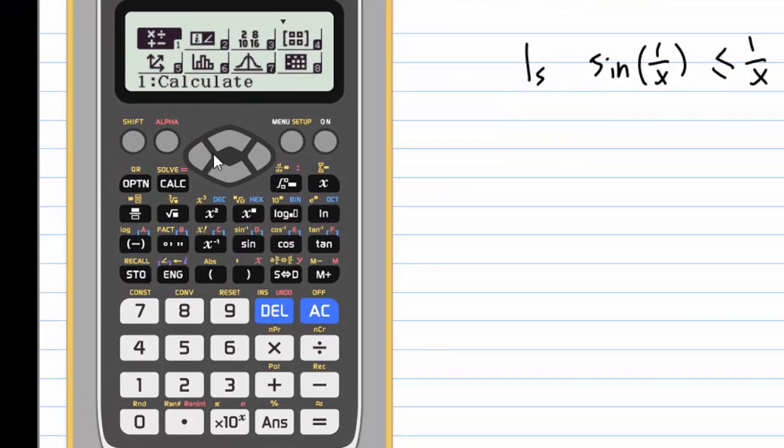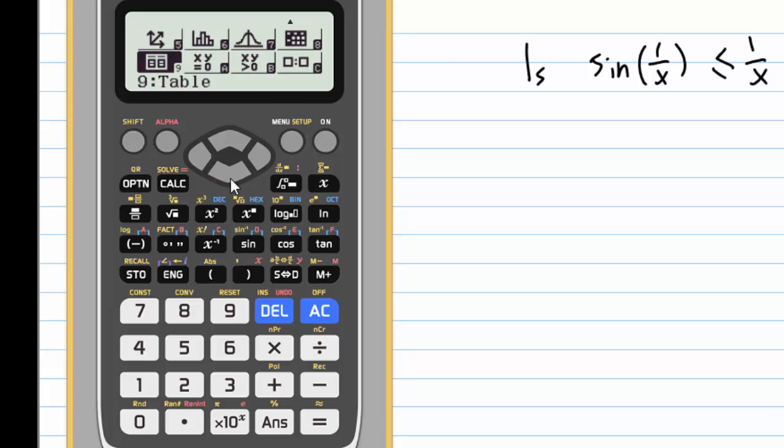In the menu, I'm going to select 9 for table, then equal. Function f(x) appears.